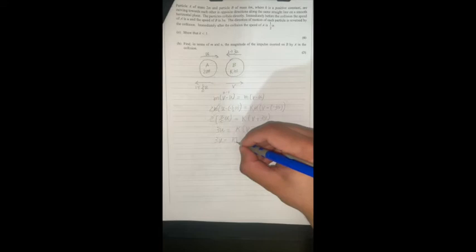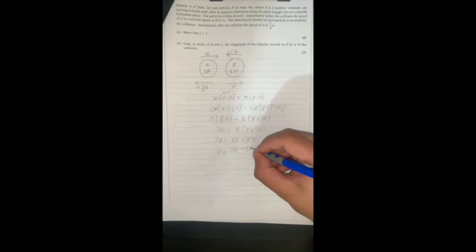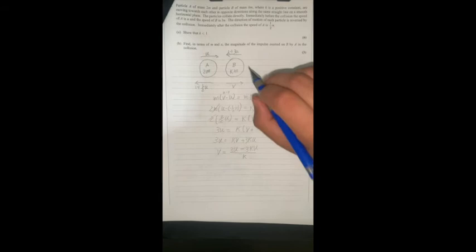So 3u equals k times v plus 3ku. Therefore v equals (3u - 3ku) over k.